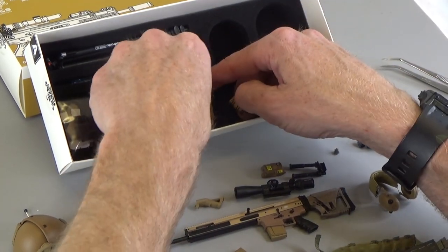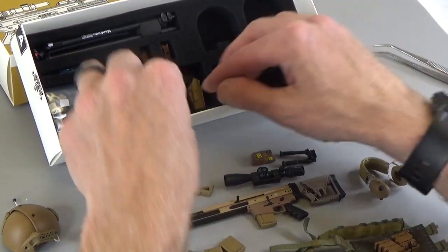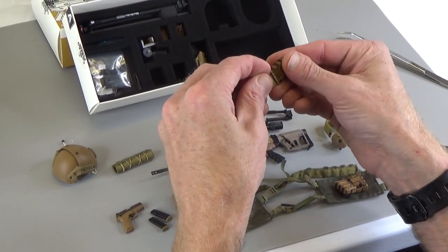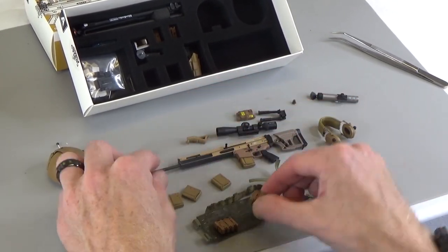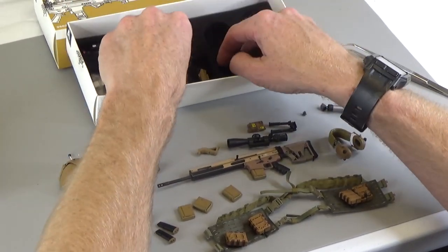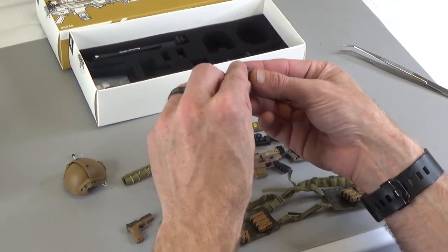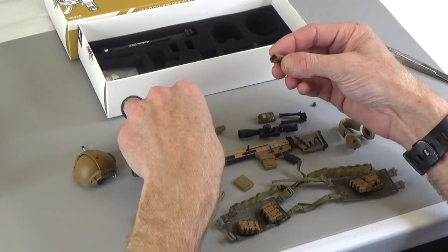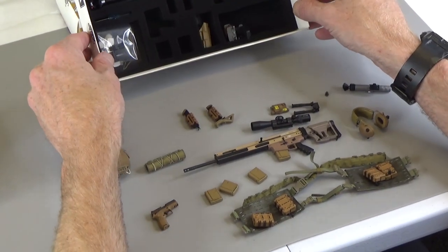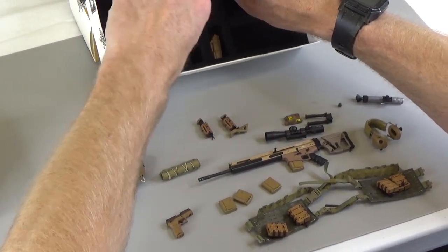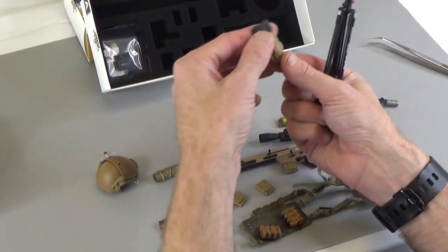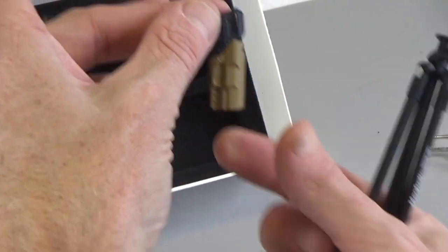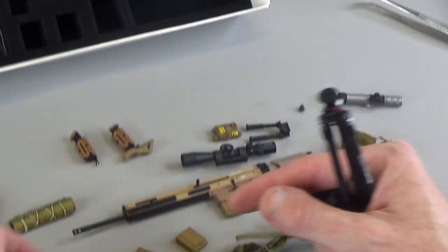Then we have some fast mag holsters. We got, looks like, enough for each of these magazines. Ooh, so cool. Now, we got a couple more really cool things. It looks like we have some pistol magazine fast mag holsters for the pistol mags. Now, we have a holster. It's a drop leg. Actually, it's not a drop leg. So that just slips right on the belt right there. That's nice. Super nice.